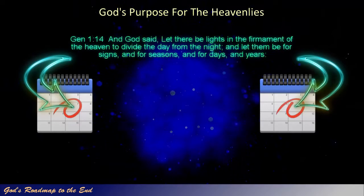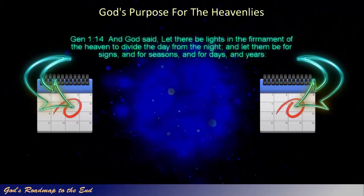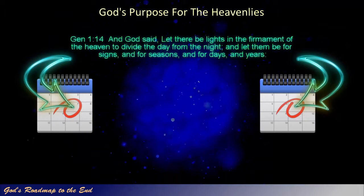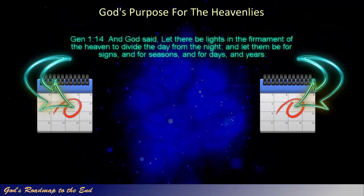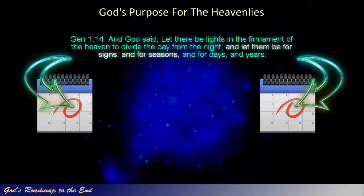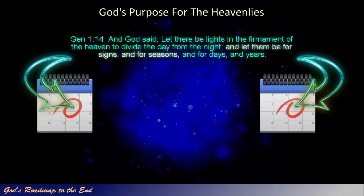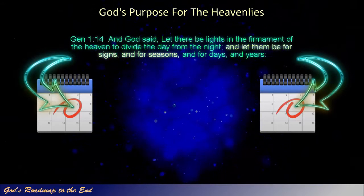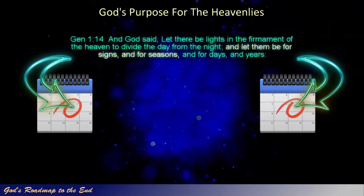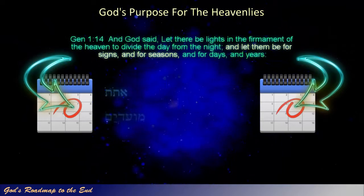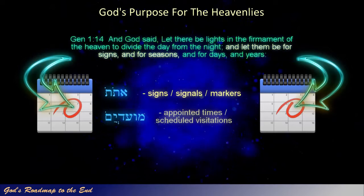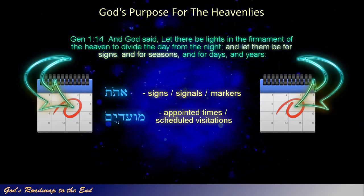Genesis 1 verse 14: And God said, Let there be lights in the firmament of the heaven to divide the day from the night, and let them be for signs, and for seasons, and for days, and years. You will note that the order in which God assigns his purpose for the lights in the heavens positions the function of acting as signs and for seasons before that of measuring out days and years. Their primary purpose can therefore be seen as markers that point out or signal specific events. If we consider the Hebrew meaning for this passage, the words for signs and seasons are translated as markers or signals that point to God's appointed times or scheduled visitations, described in the Bible as holy convocations.